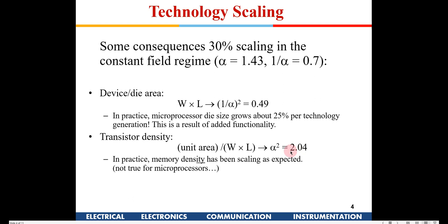A question arises: if substrate doping is increased, won't that raise the threshold voltage Vt? Yes it does, and that is why initially polysilicon gates were used, but since substrate doping needed to be increased, we moved to aluminum and other metals. We also use channel engineering — performing the required doping in the channel area before the gate is formed to achieve the desired Vt. Gate engineering involves selecting the appropriate gate material to adjust Vt.